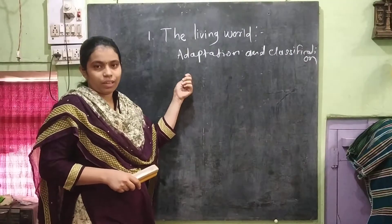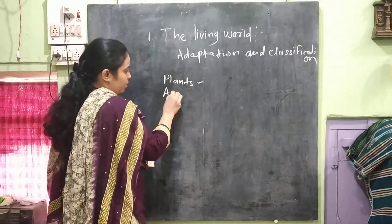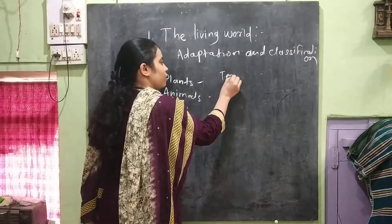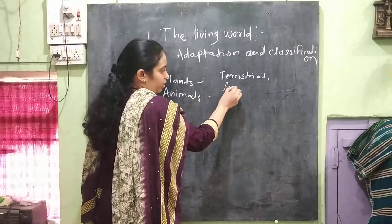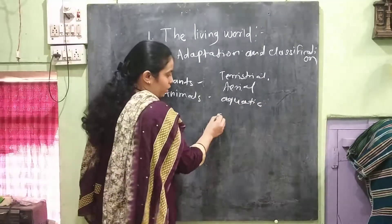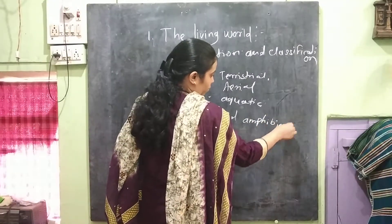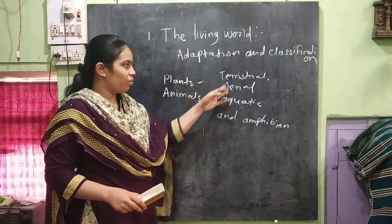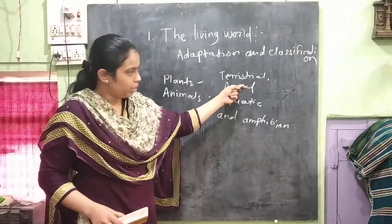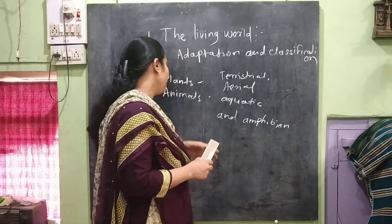You know very well that on our earth there are different types of plants and animals. They are adapted for the terrestrial, aquatic, and amphibian environments. Terrestrial means living on land, aerial means moving through the air, aquatic means living in water, and amphibian means living both in water and on land.